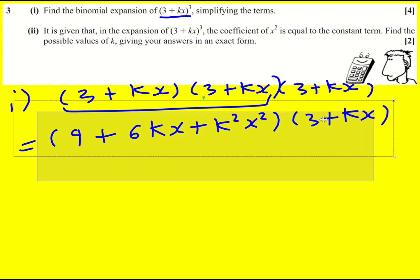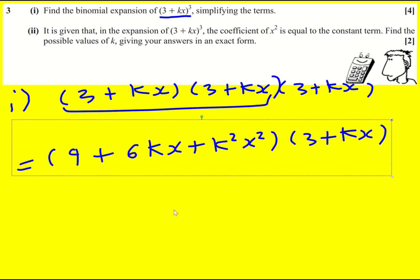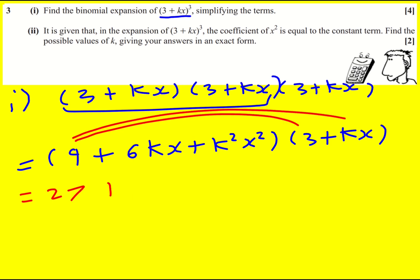Now I just need to multiply the corresponding terms together so I'm going to get 27 plus 9kx, plus 18kx, plus 6k squared x squared.